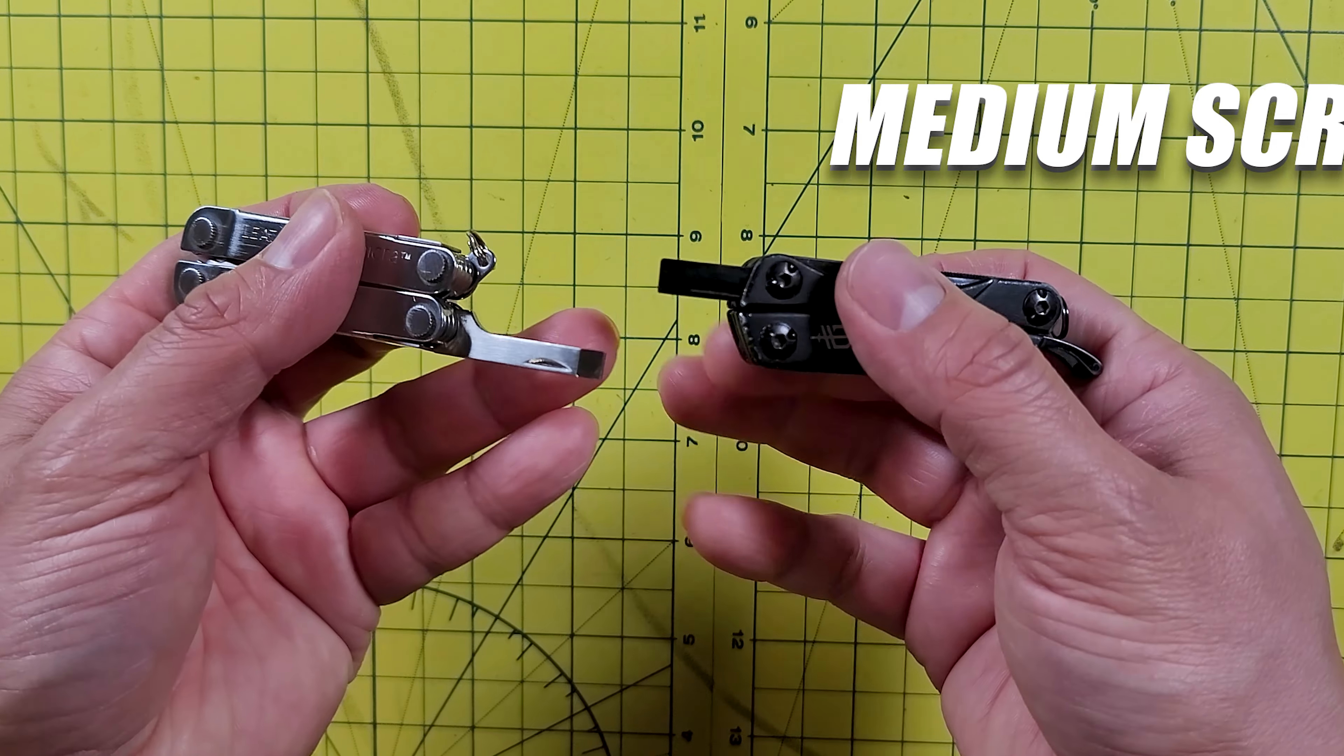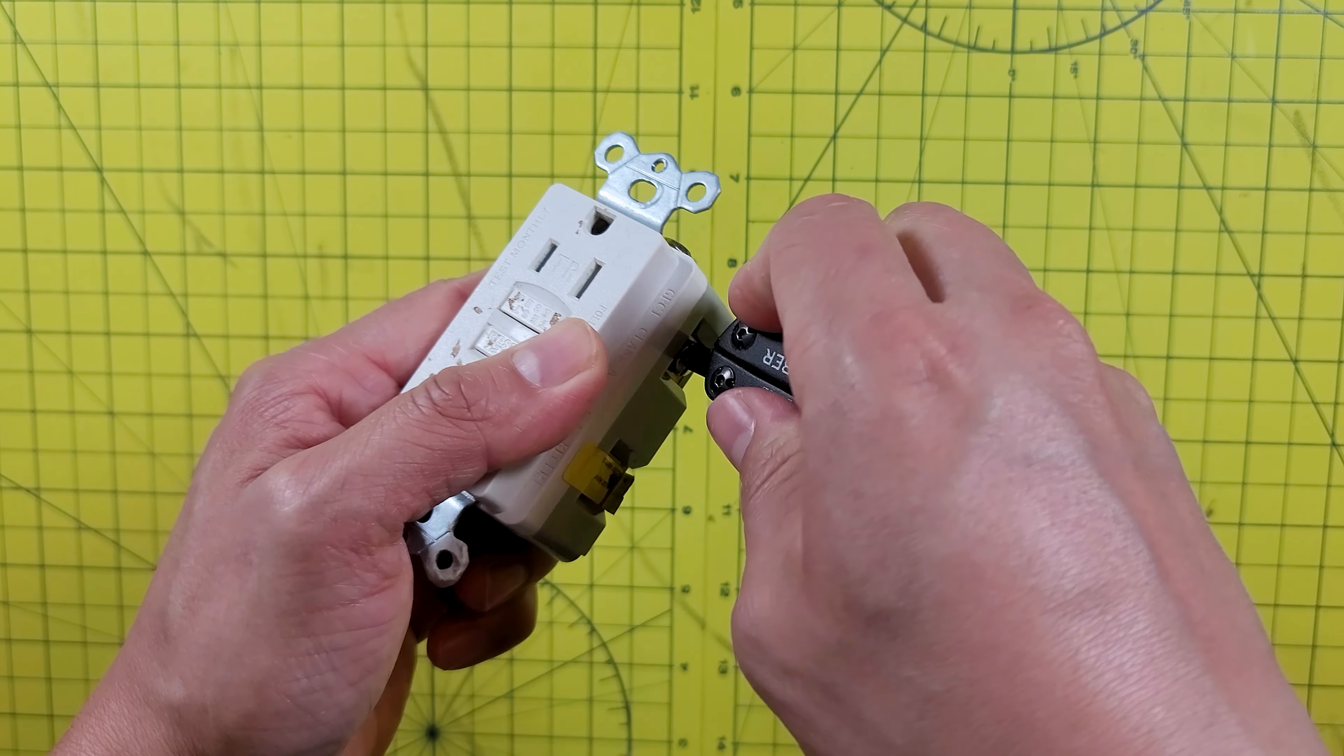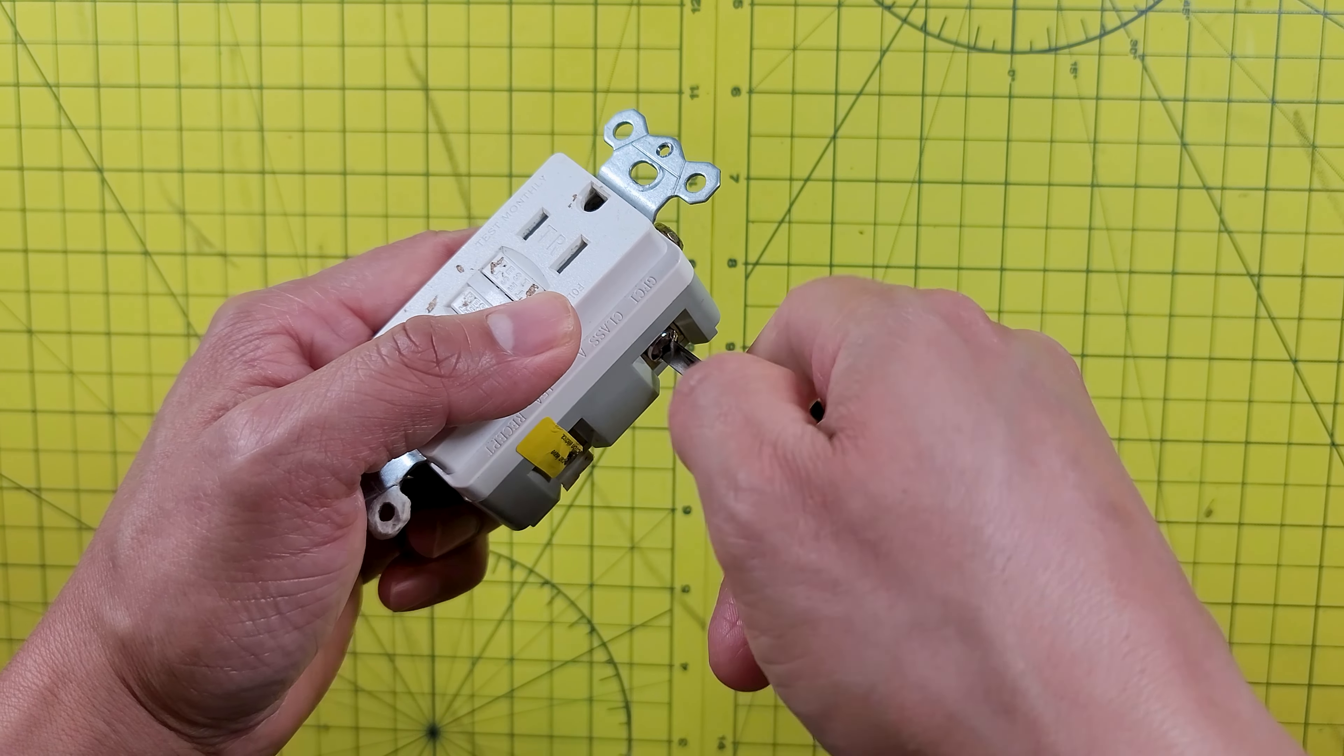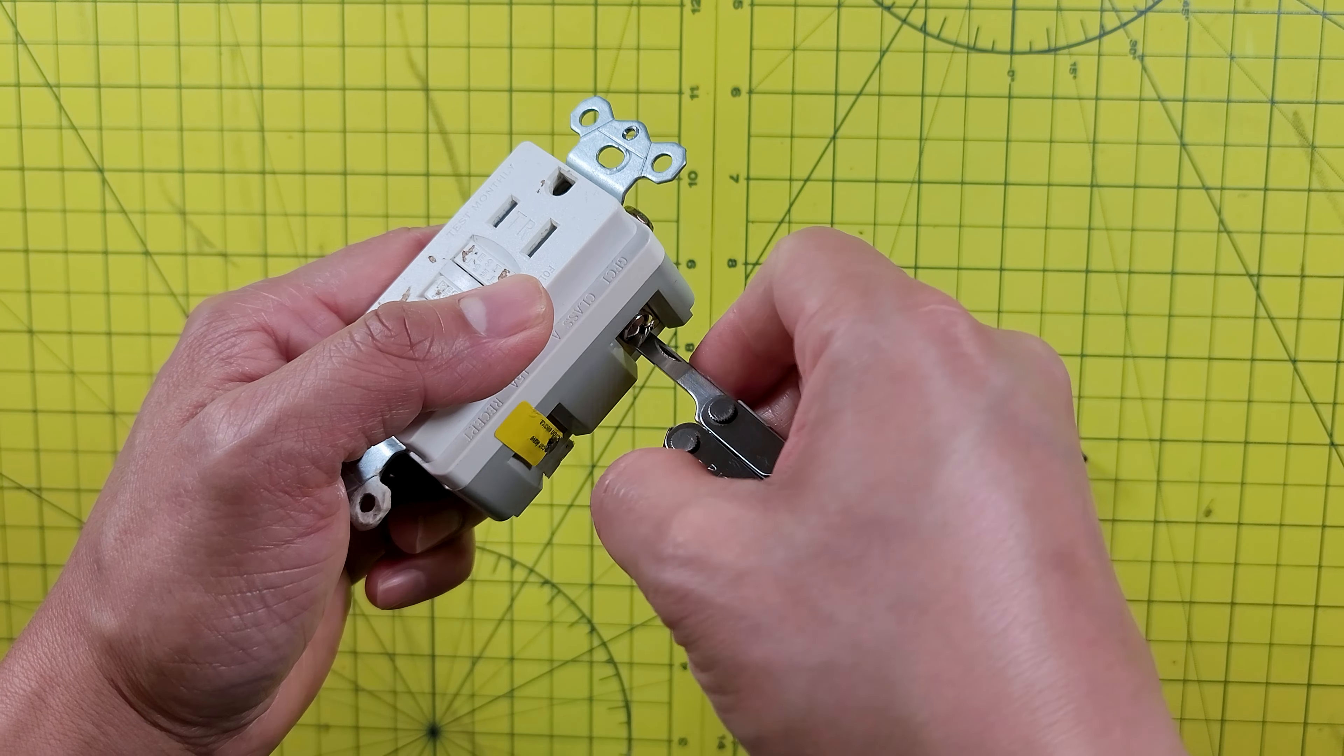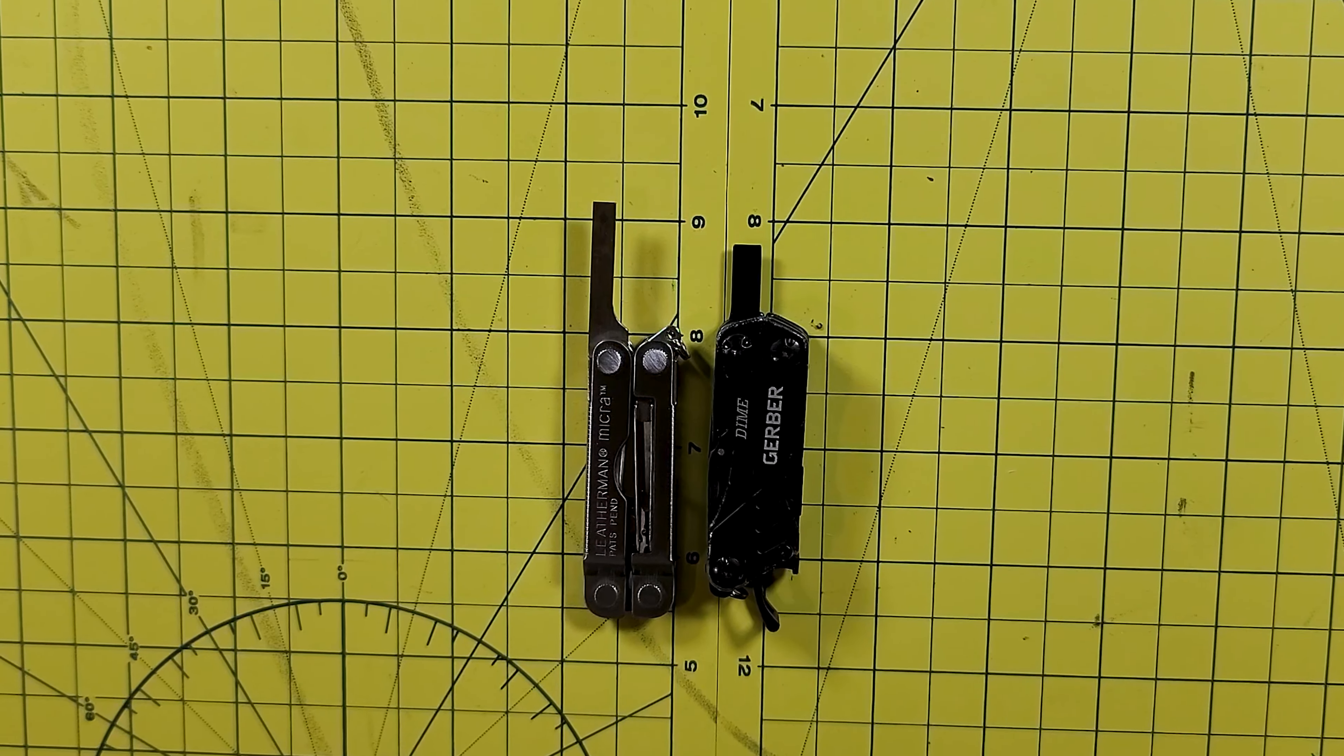Next you have the medium screwdrivers. The medium flatheads always come in handy. Both of these work perfect. I've tried both of them and they work just fine for small jobs. I would think that eventually the black paint on the Dime will come off with time, but that's not much of a problem. So I would say we have a draw when it comes to the medium screwdrivers.